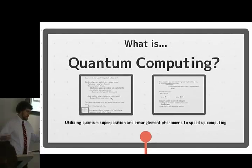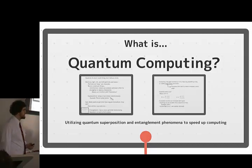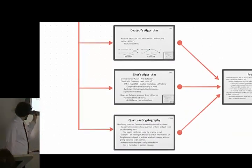So quantum computing, very generally, it's utilizing quantum superposition and entanglement phenomena to speed up computing. And it doesn't always work, but it usually works. Not every algorithm, that we know of, or not every problem that we know of can be solved with quantum computing. But some of them are a lot better, which is what I'm going to talk about right now. I'm going to talk about two algorithms and one method.